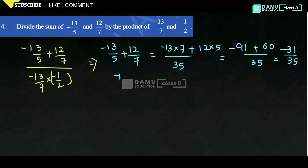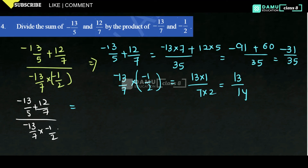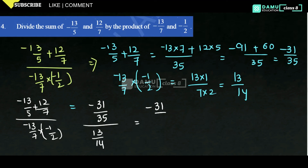The product of minus 13 by 7 into minus 1 by 2 equals 13 by 14. So the full expression is minus 31 by 35 divided by 13 by 14. Dividing means taking the reciprocal: minus 31 by 35 into 14 by 13.